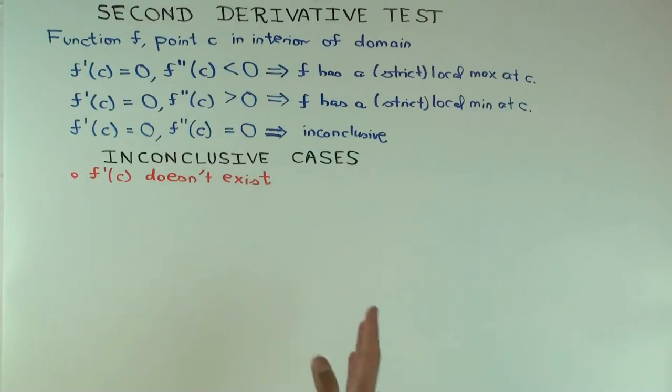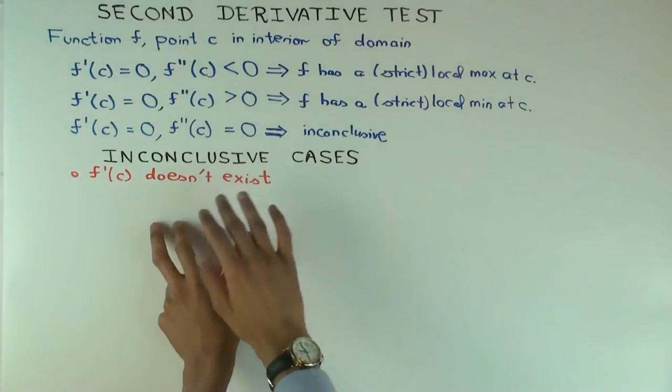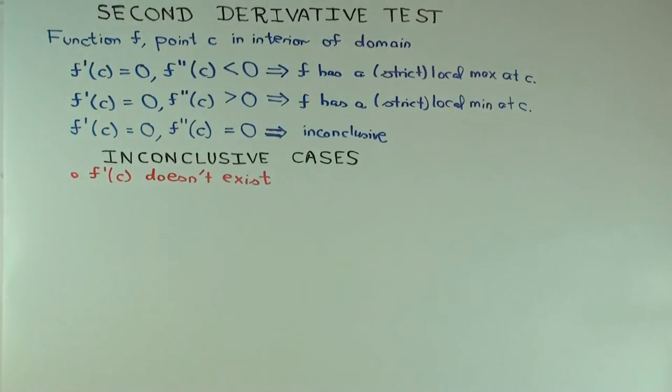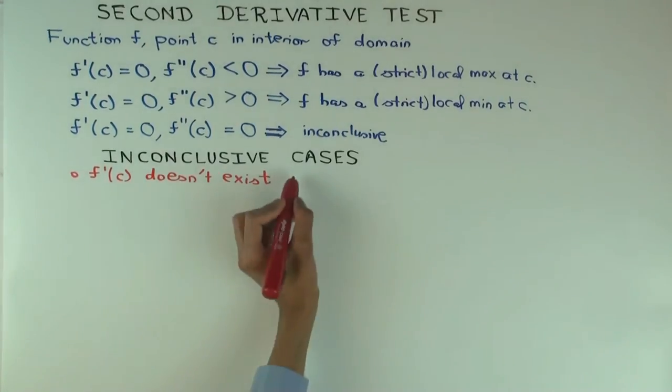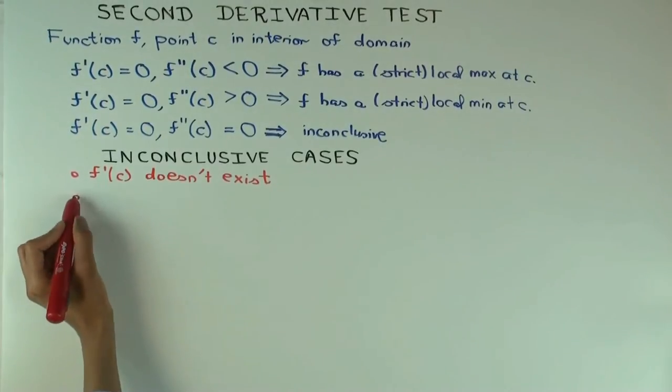Because the first derivative test just depends on the sign of the derivative, the sign of the first derivative on the immediate left and right. It doesn't depend on the function being differentiable at the point. Right? Yeah. So, you may be able to use the first derivative test. I'll write that later.